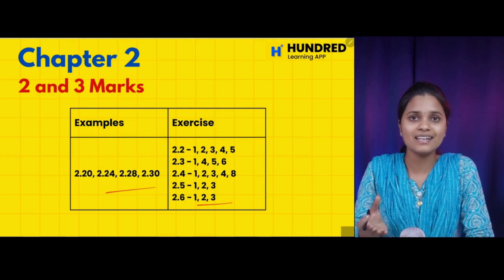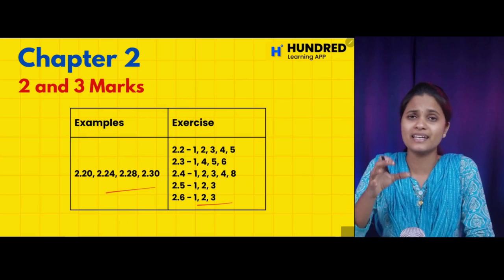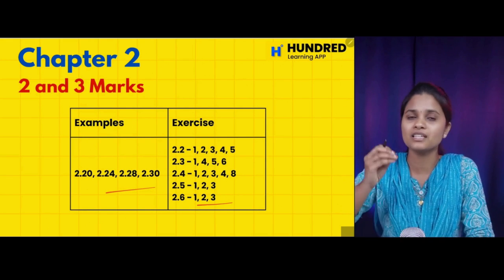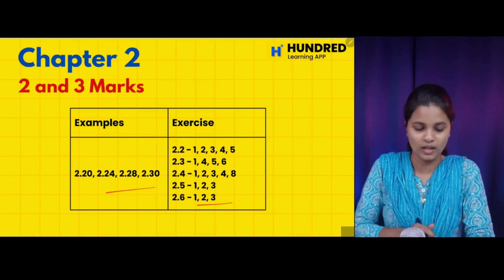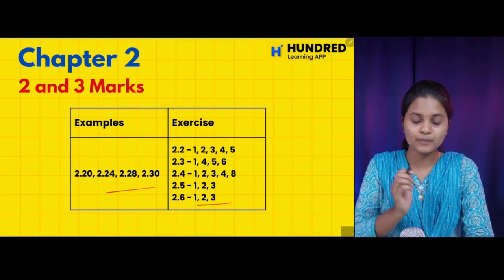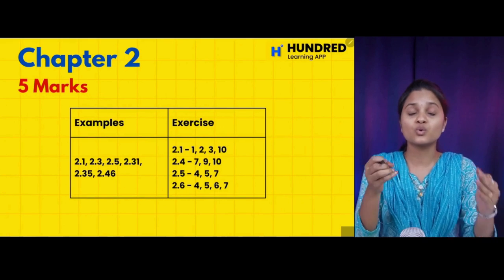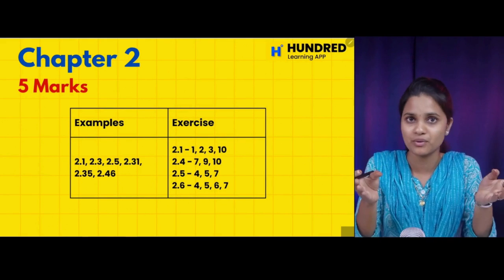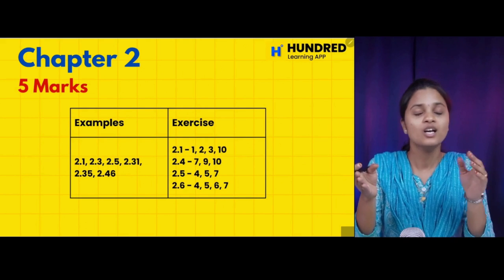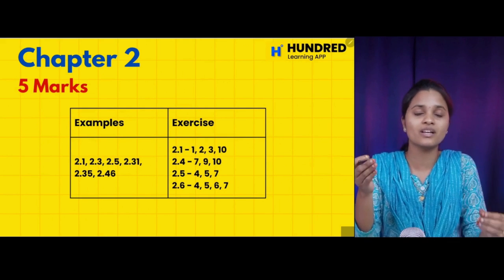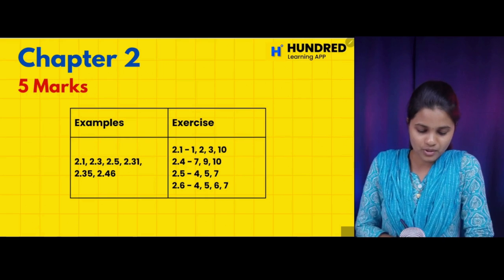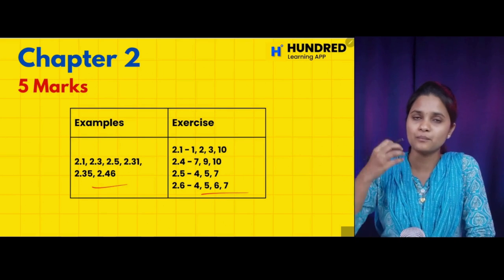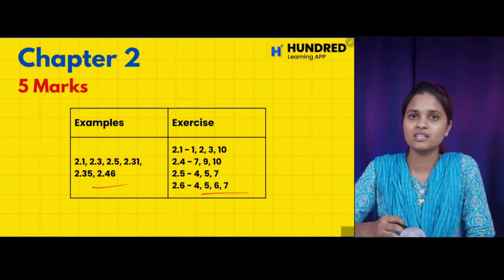Last time you have a revision — you can use any formulas or any concepts, you can use any problems. In the next chapter 2, you have a 5-mark question. So you have priority for 2 and 3-mark questions first; the maximum we have is 5-mark questions. If you have 2 and 3-mark clear, 5-mark questions are from examples and exercises. Just follow the checklist.